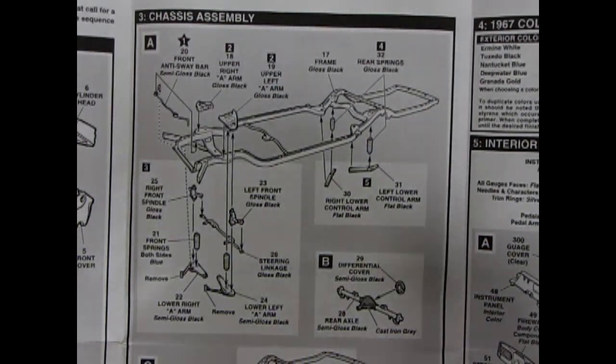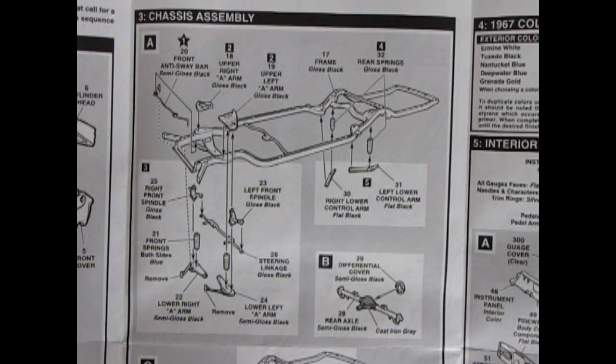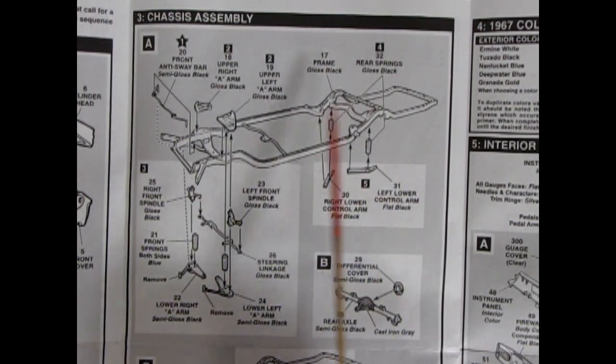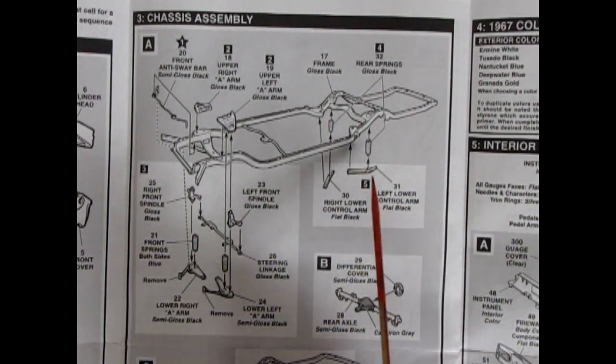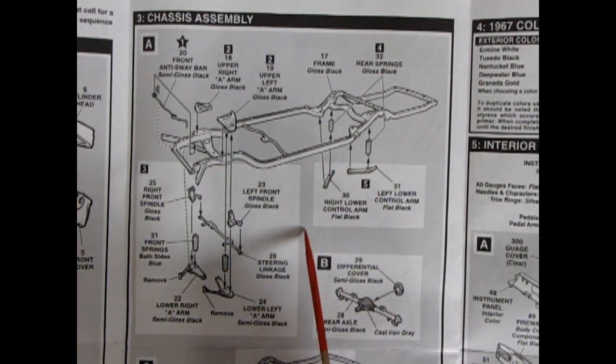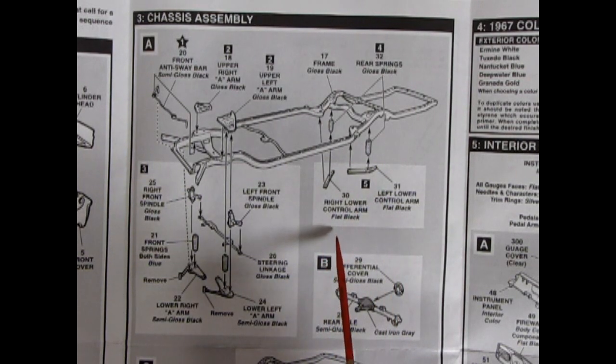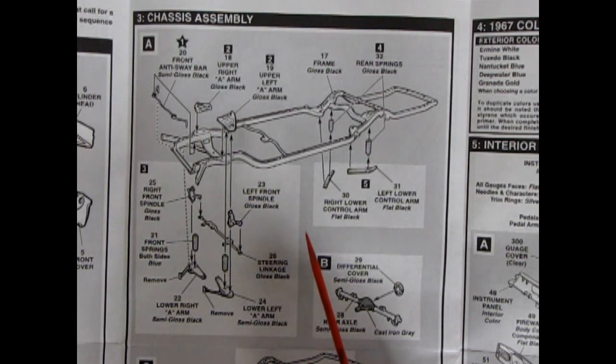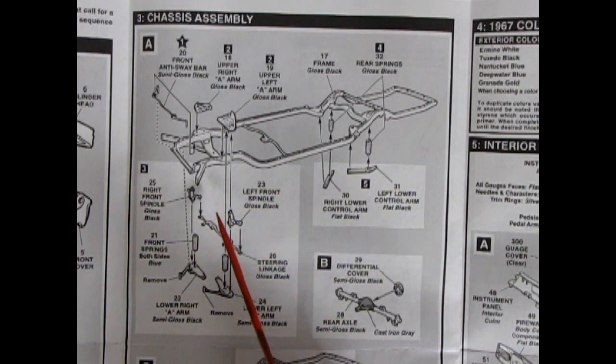Getting into our next panel here we've got our chassis assembly. And what is nice is the full perimeter frame that they give you in here. Then you've got your coil springs and your right and left lower control arms. You've got the full suspension here and this one's nice because you can actually make this have posable steering. Very easy. They give you everything right there.